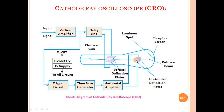The horizontal amplifier connects to the horizontal deflection plates. From the delay line, the signal goes to the vertical deflection plates. The electron beam strikes the phosphorous screen, producing a luminous spot.